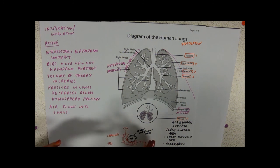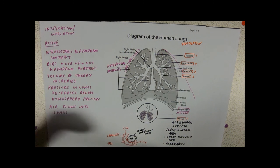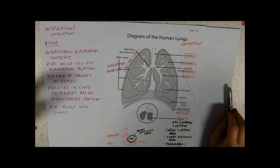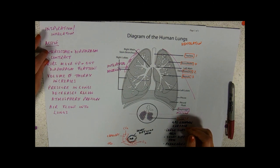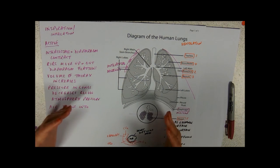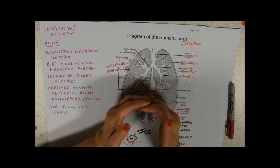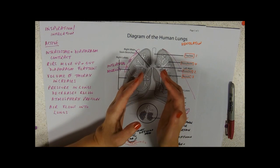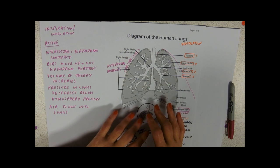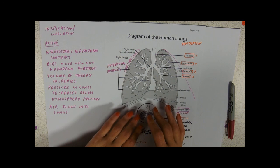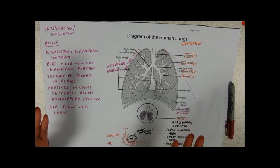Now, the breathing out, exhalation, is the exact opposite. The intercostals, after they've finished contracting, they relax. The ribcage drops down and the diaphragm moves up. The volume goes back down. Pressure in the lungs increases above atmospheric pressure and air flows out of the lungs.